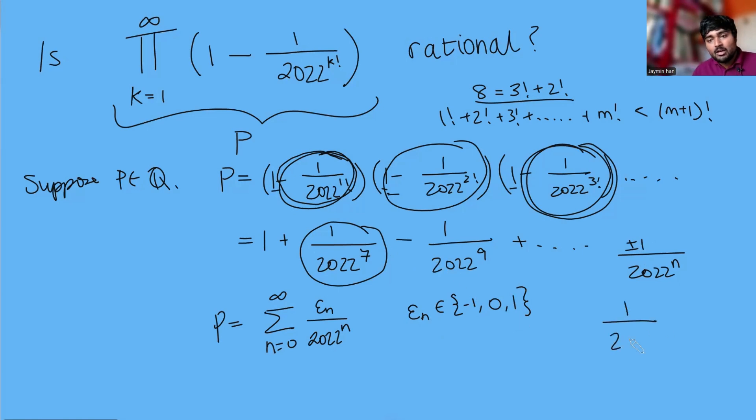For example there won't be a 1 over 2022 to the 4 term because it's impossible to write 4 as the sum of factorials using positive numbers and distinct factorials because 3 is 2 factorial plus 1 factorial. So if you're trying to write 4 as the sum of factorials you'd need to use 3 factorial but 3 factorial is already 6 so that's too big. So P is this sum here, the sum from n equals 0 to infinity of epsilon n over 2022 to the n where epsilon n is either minus 1, 0 or 1.